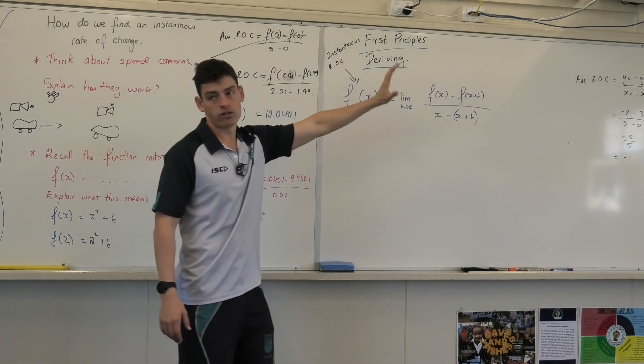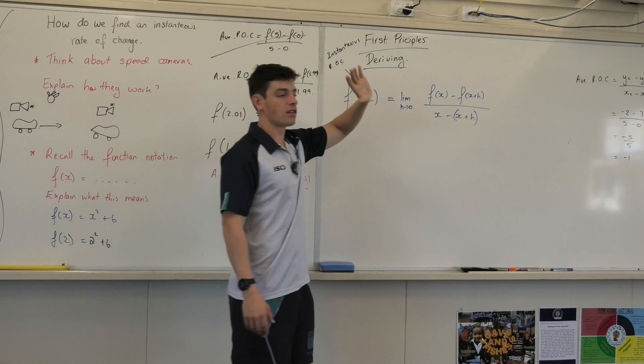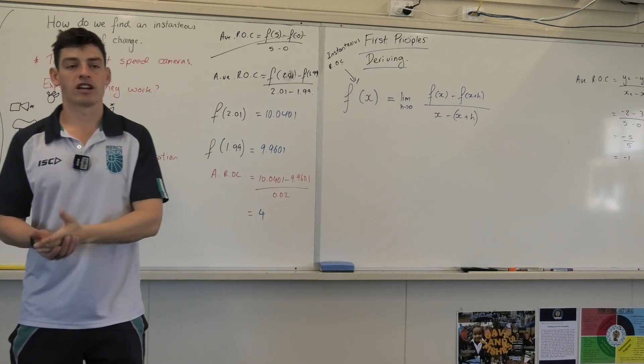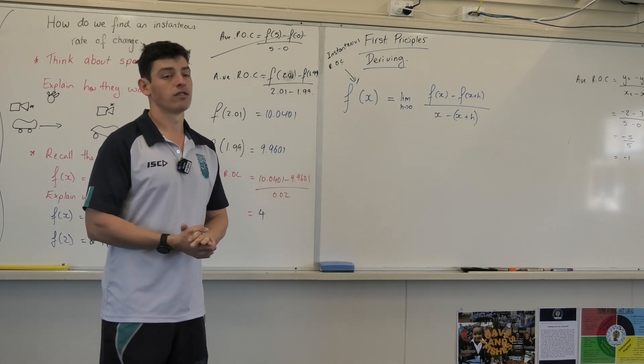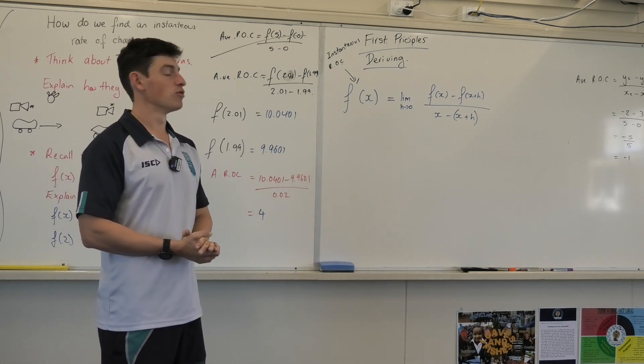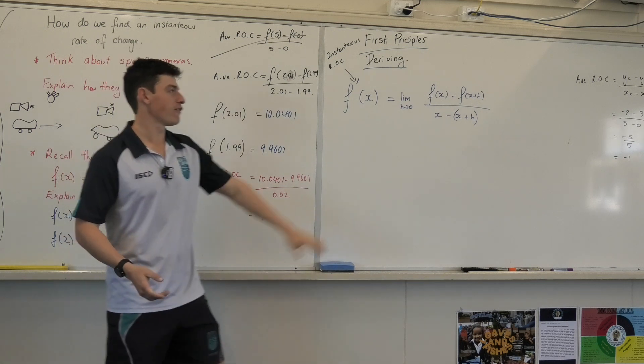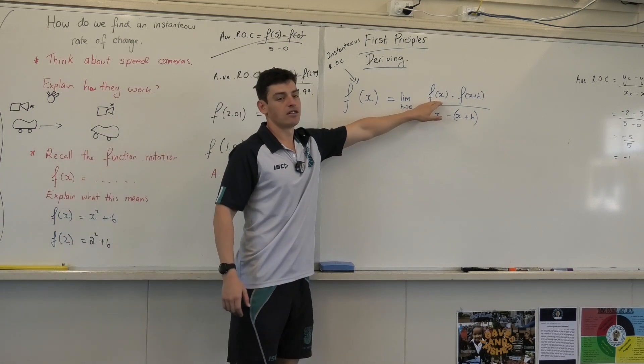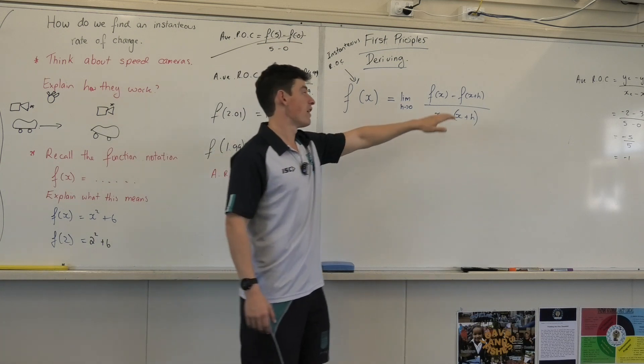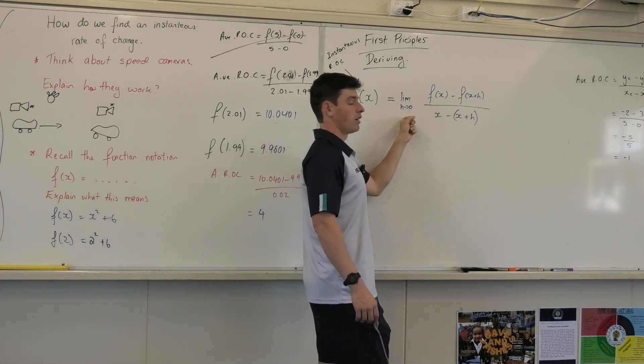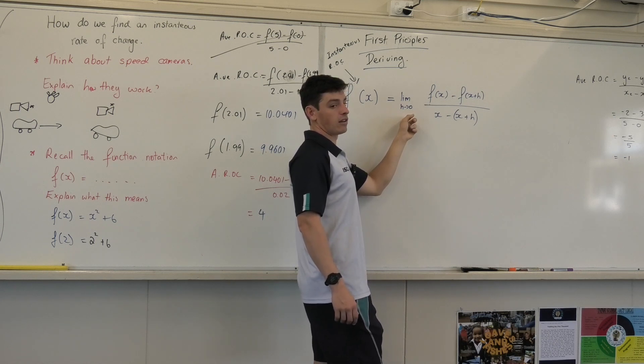Can someone have a go at telling me what they think this equation means? So the instantaneous rate of change is equal to, Sarah, unfortunately you moved. Yeah, what do you think it means? So what's fx mean? fx is your one. Yeah, so whatever my function is, whatever my value happens to be at that point of time. And the limb h means that it should be 0 in this instance?